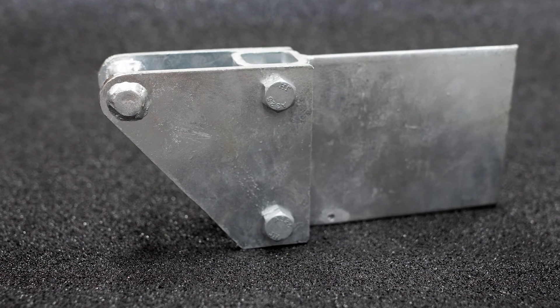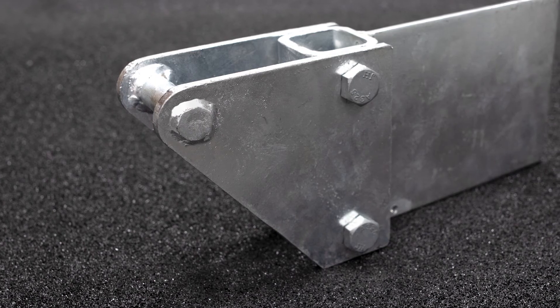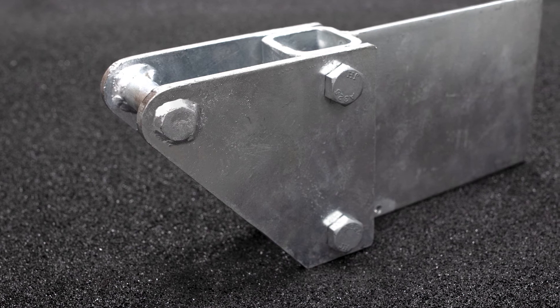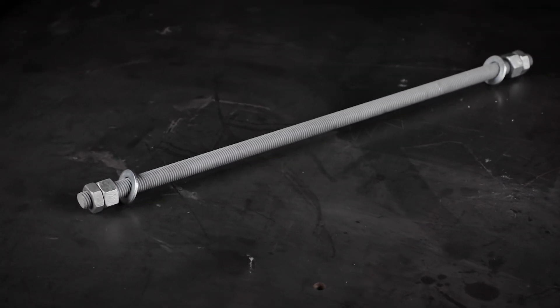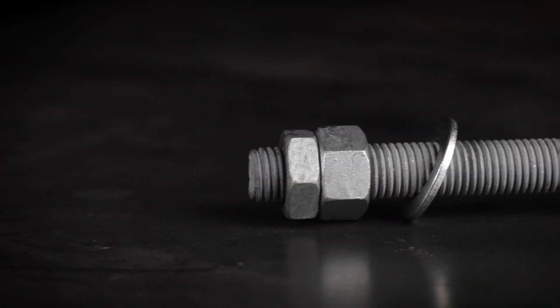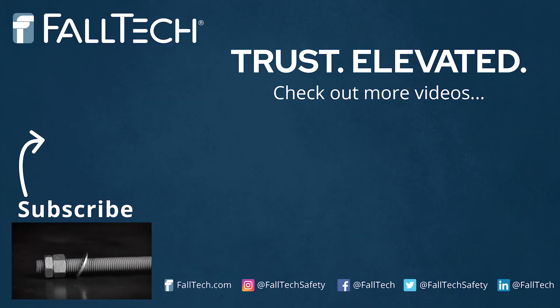There is also a weld-on ladder stanchion anchor designed for applications where an existing structure above the ladder can serve as the anchor point for the self-retracting lifeline. For hollow rung ladders or ladders with insufficient rung strength, rung reinforcement bar assemblies are available to install a FALTEC ladder stanchion anchor. See User Instruction Manual for more information.